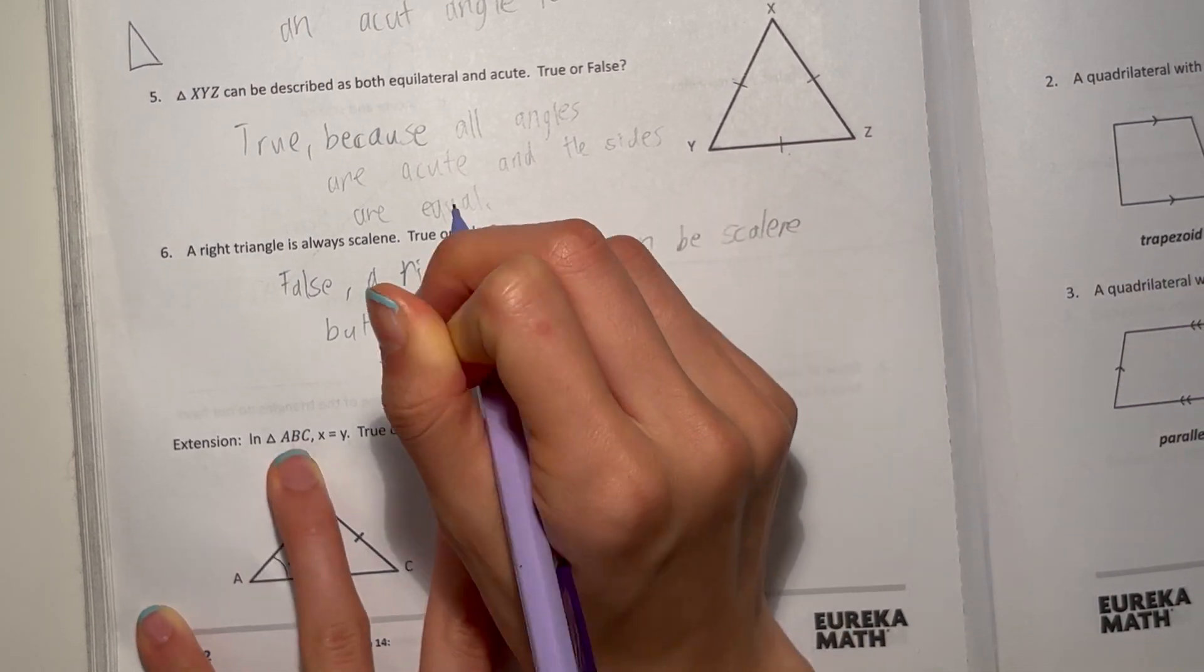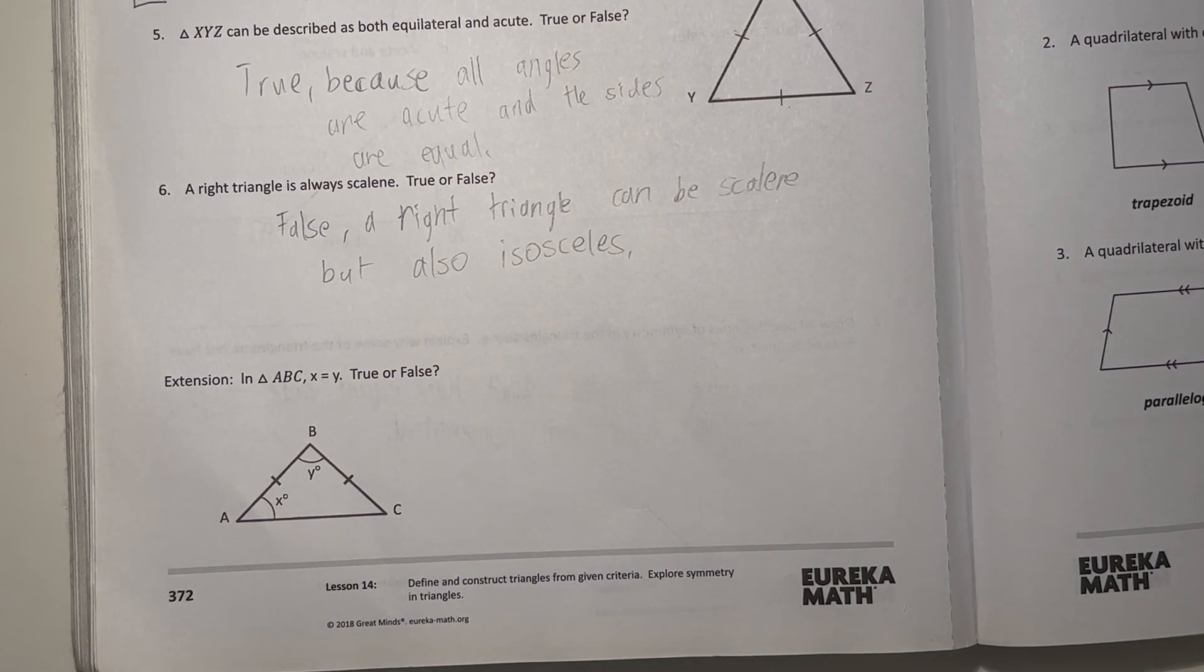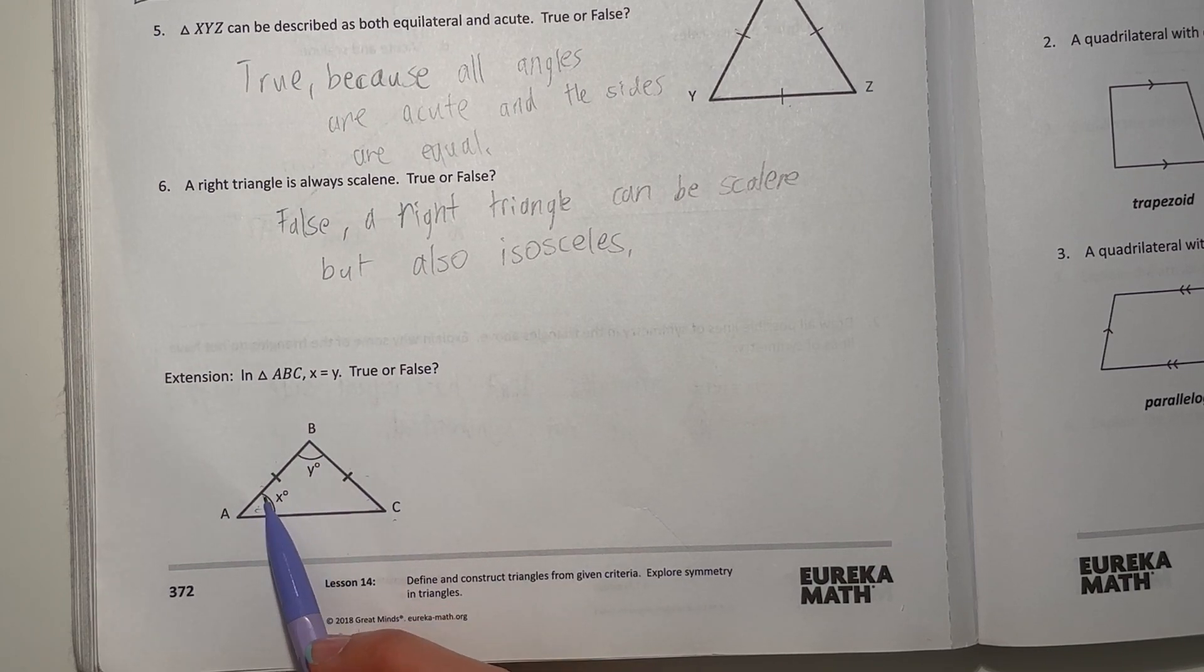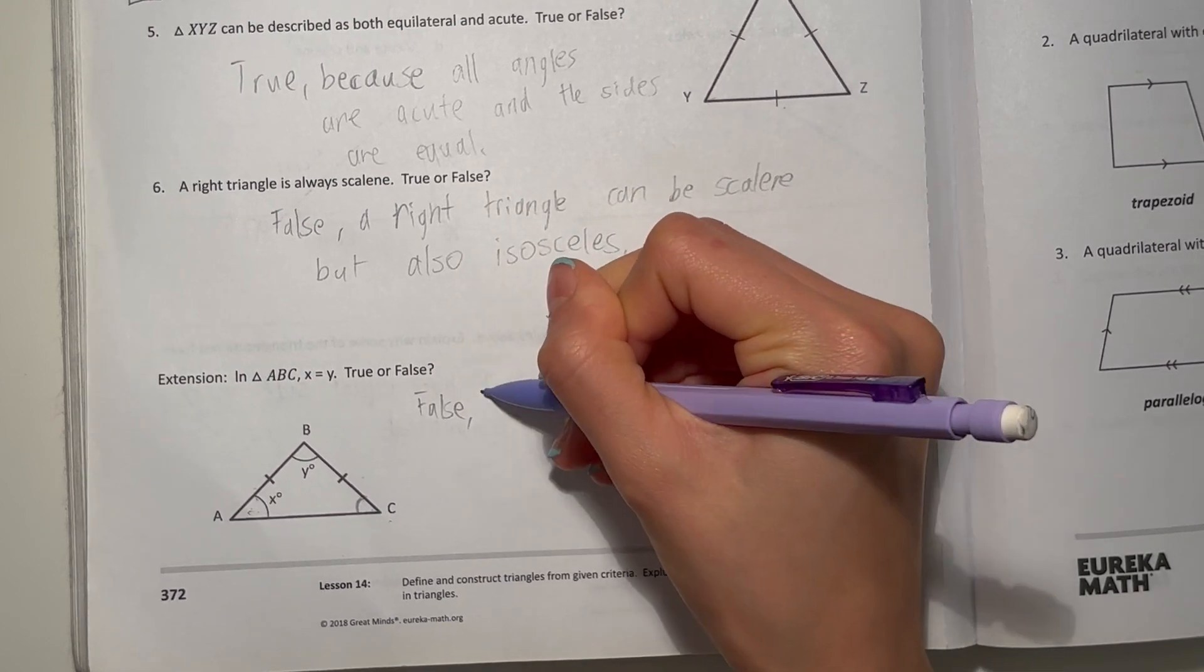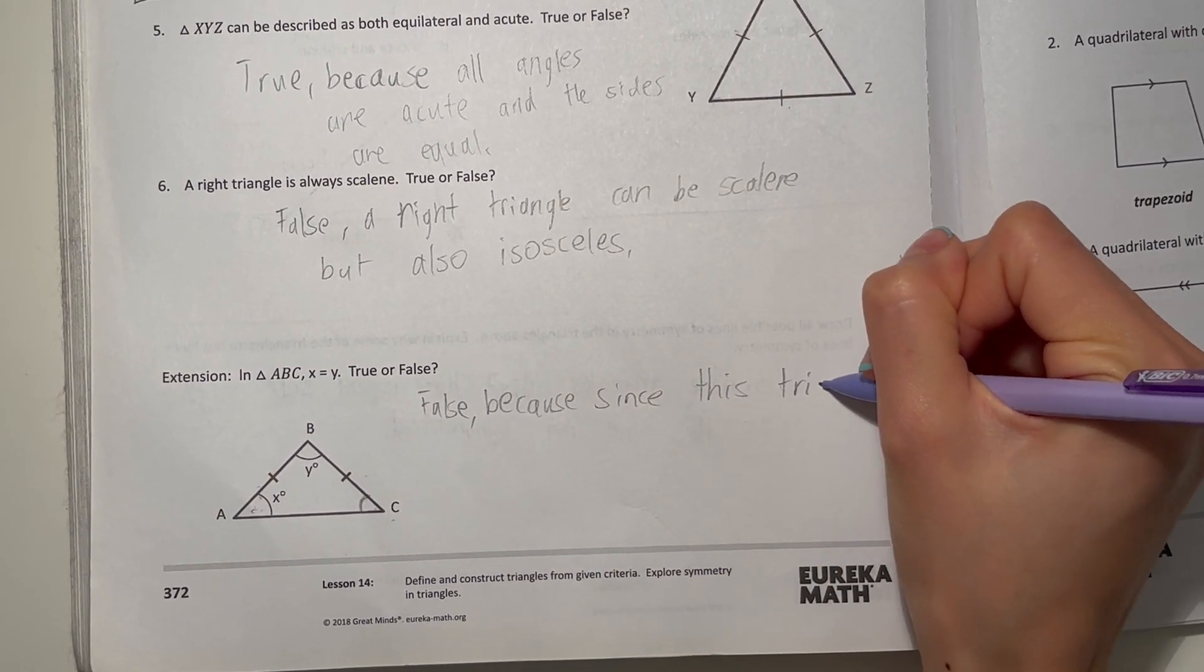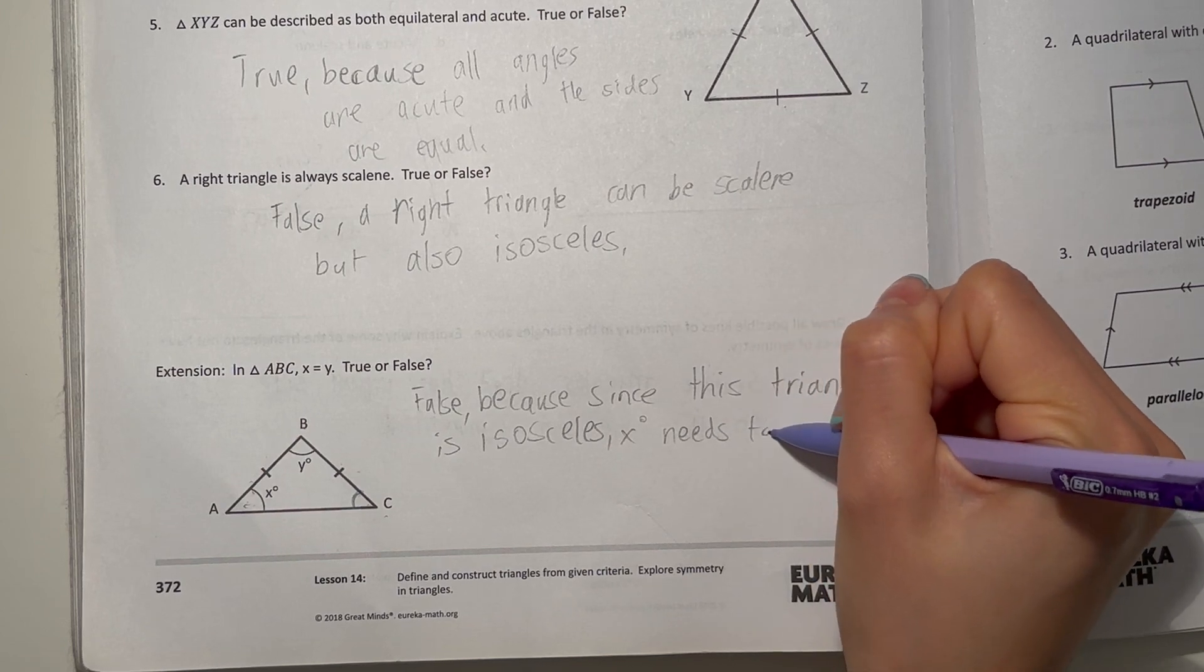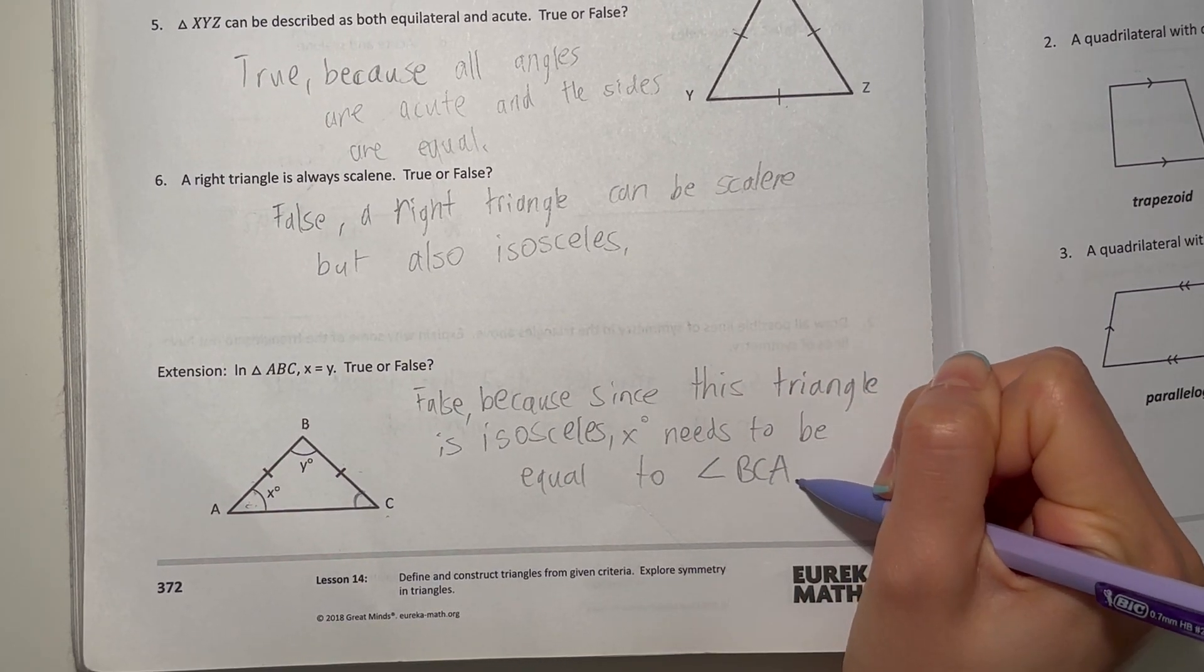So that was false. Now here, extension: in triangle ABC, X equals Y, true or false. So this is an isosceles triangle. Then the angles here and here must be equal since these two sides are equal. So X cannot be equal to Y. X would be equal to this angle right here, angle BCA. So false, because since this triangle is isosceles, X needs to be equal to angle BCA, so it's not equal to Y.